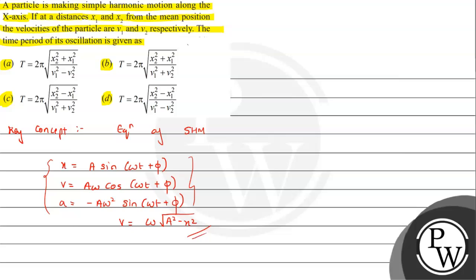We have already derived this expression by considering the projection of uniform circular motion as SHM. This expression will be useful for this particular question. Here we can see that in the question, we have two positions given, x1 and x2, and velocities are given.